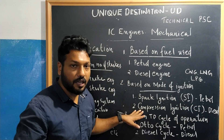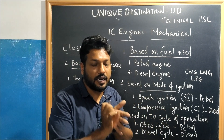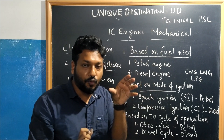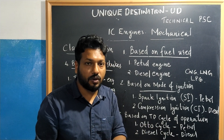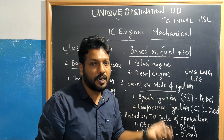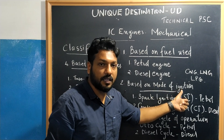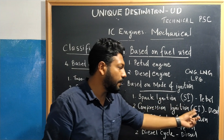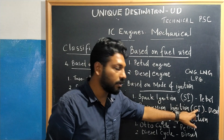The second mode of ignition is compression ignition. In a compression ignition engine, the piston compresses the volume, which automatically raises the temperature and pressure inside the cylinder. When fuel is injected, it ignites automatically due to this high pressure and temperature — no spark is needed. This is the compression ignition process, and diesel engines are CI engines.